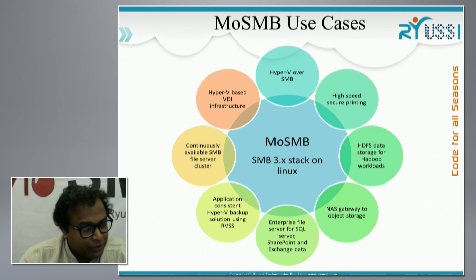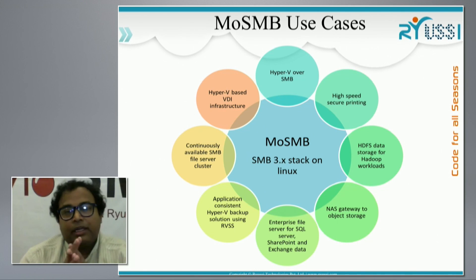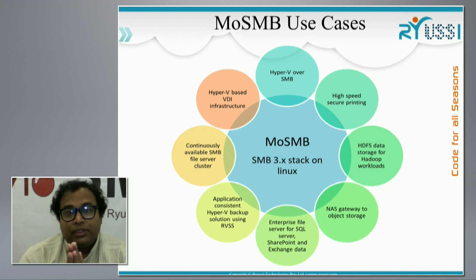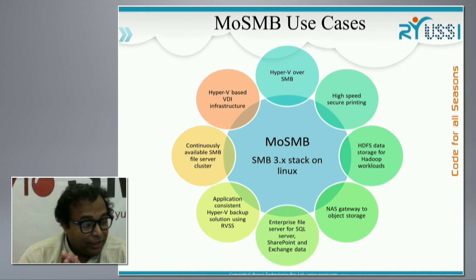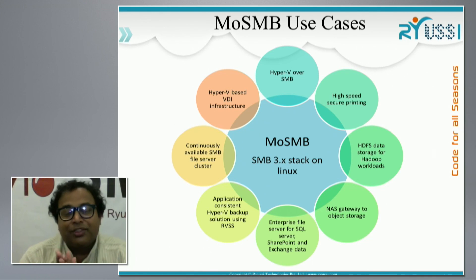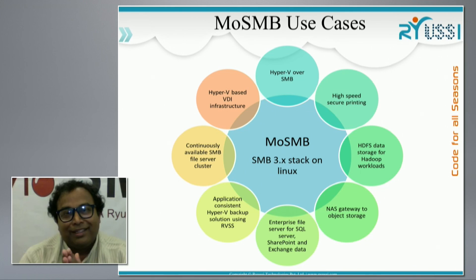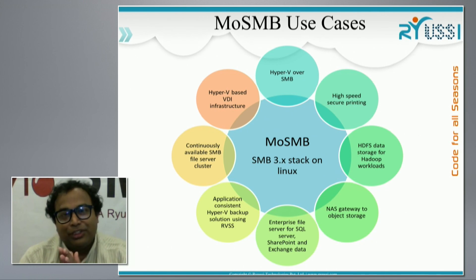An important part of the Mosambi architecture is that internally we collect a lot of statistics, and rather than overuse the hyped words of machine learning and artificial intelligence, we do use a lot of IO pattern analysis to figure out what are the best ways to do storage IO, caching, and other things.